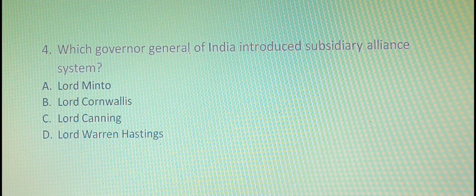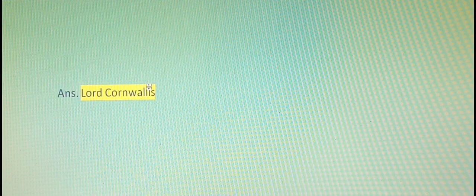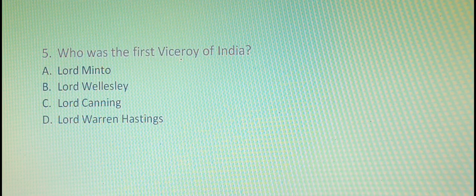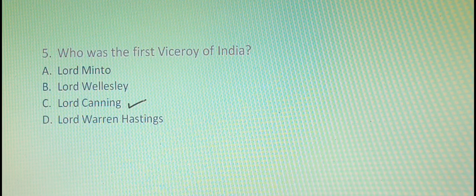The fourth question is: which Governor General of India introduced the Subsidiary Alliance system? The right answer is option B, that is Lord Cornwallis. Our fifth question is: who was the first Viceroy of India? The right answer is option C, that is Lord Canning.